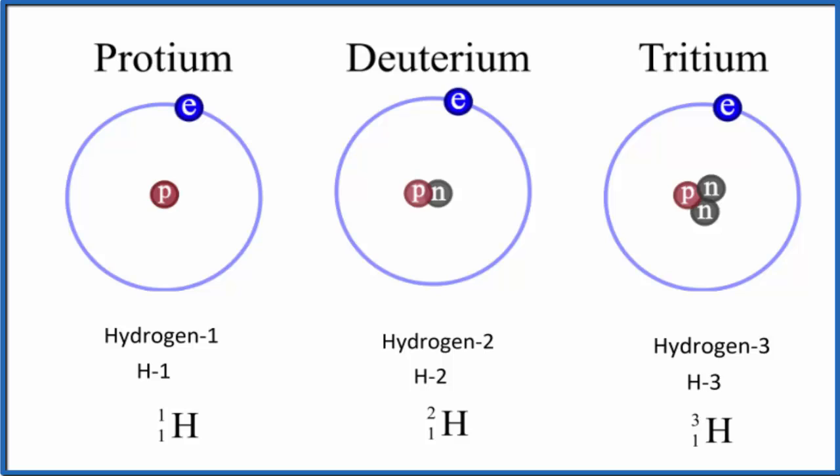That brings us to another difference with hydrogen. The isotope protium for hydrogen, which is most of the hydrogen in the universe, doesn't have any neutrons. So we can have an atom, we can have this isotope here with no neutrons—that's what hydrogen mostly does.